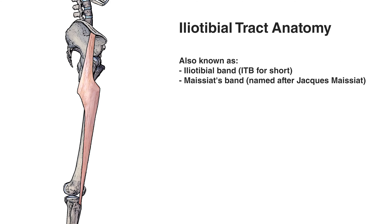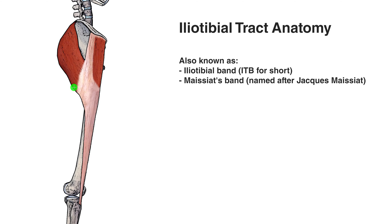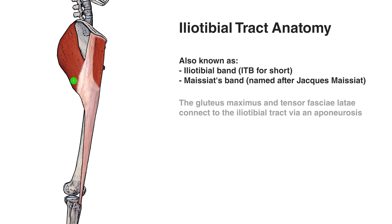The iliotibial tract isn't classed as a muscle — rather, it's a thick band of connective tissue known as fascia. However, the iliotibial tract is actually connected onto the tensor fasciae latae muscle, which you can see right here, and it's also connected onto the gluteus maximus muscle as well. You can see how the fibres of the gluteus maximus and the tensor fasciae latae are merging into the fascia of the iliotibial band through an aponeurosis.